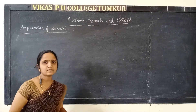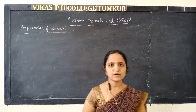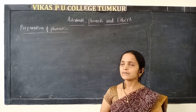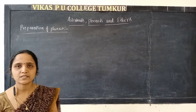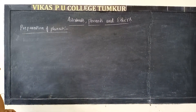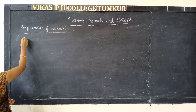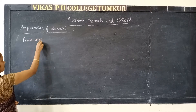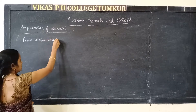In the previous class, we discussed how to prepare phenols using halocarbons and benzene sulphonic acid. In this class, we are going to discuss the preparation of phenols by other methods. Using different reactants, we can prepare phenols. We are now going to discuss how to prepare phenols from diazonium salts.